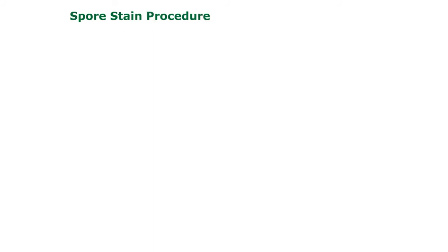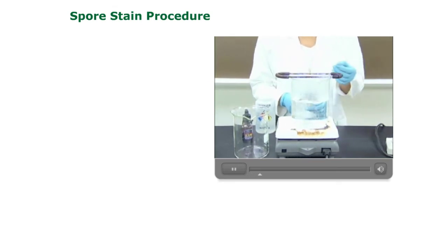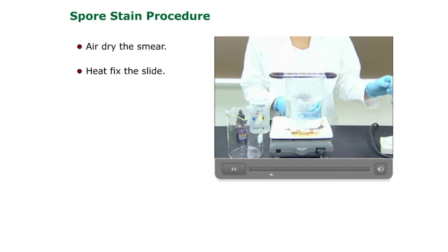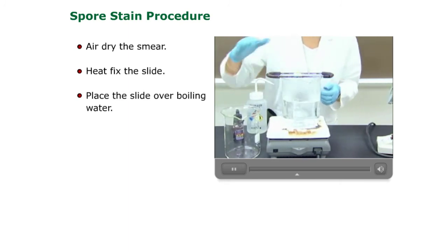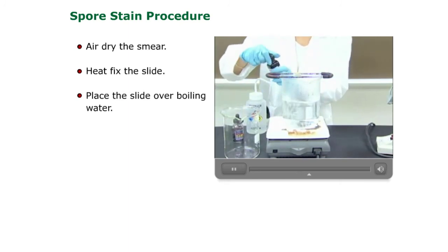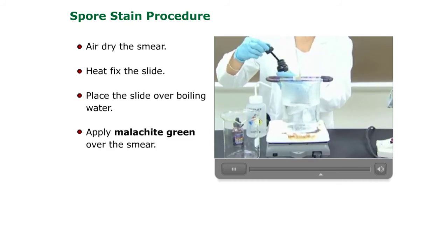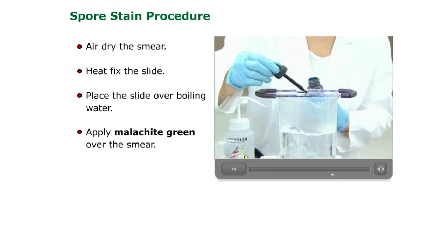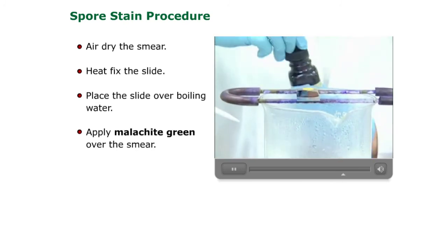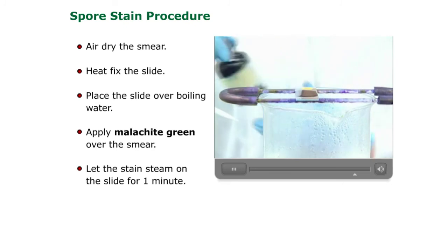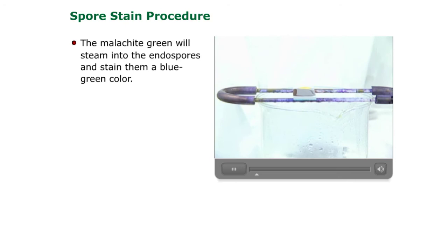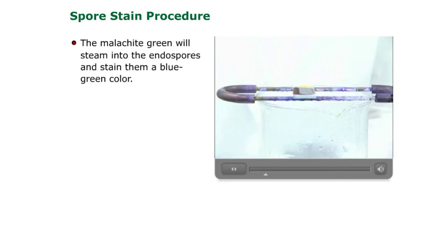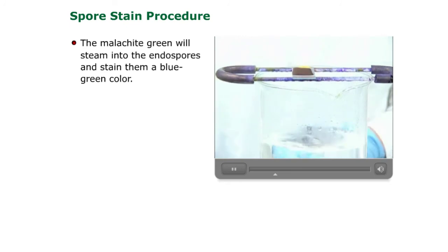Let's watch the spore stain procedure. The first step in the endospore stain is to make the smear, air dry, and heat fix the slide. You place the slide over steaming water, and then you put malachite green on the smear, right over where your smear is on the slide. Leave the malachite green on the slide to steam for one minute. The malachite green will steam into the endospores and stain them a blue-green color.